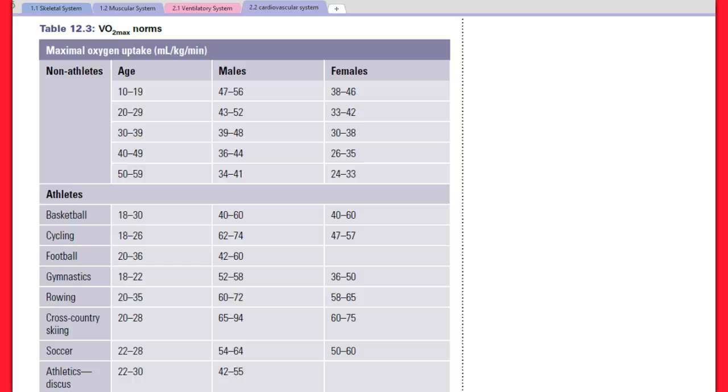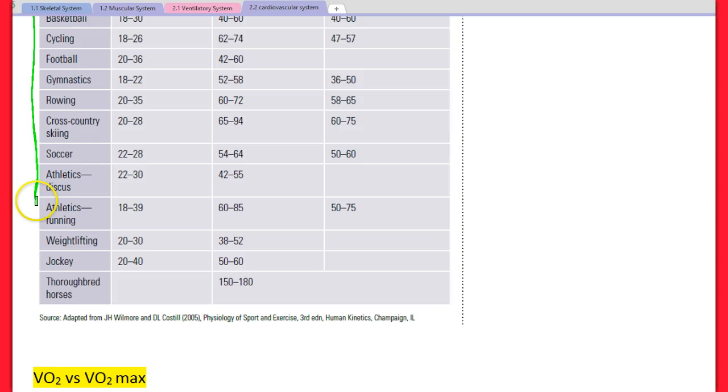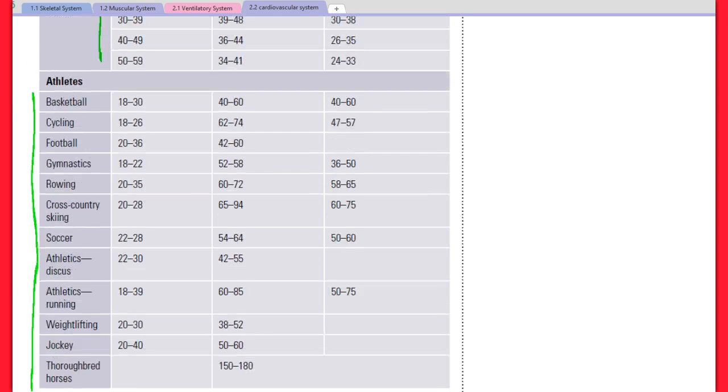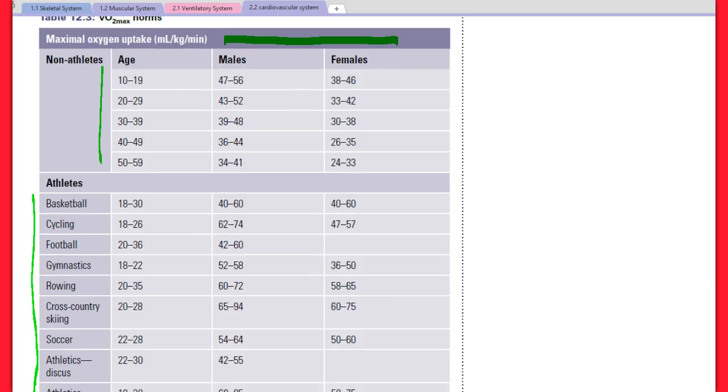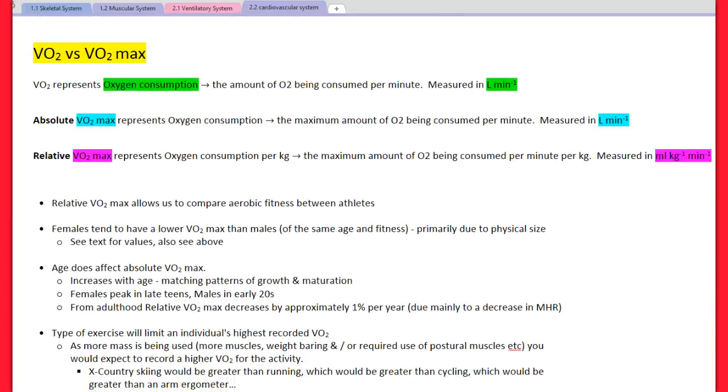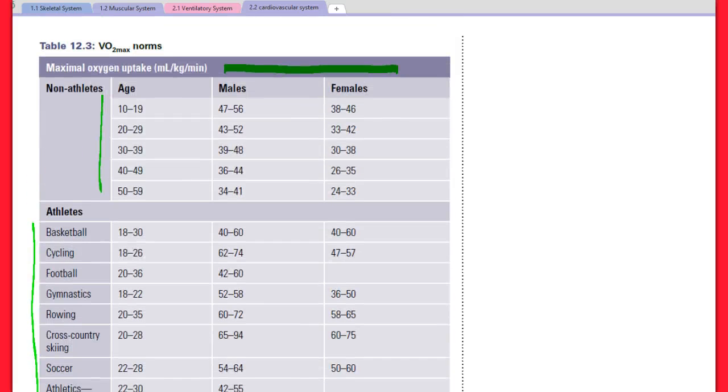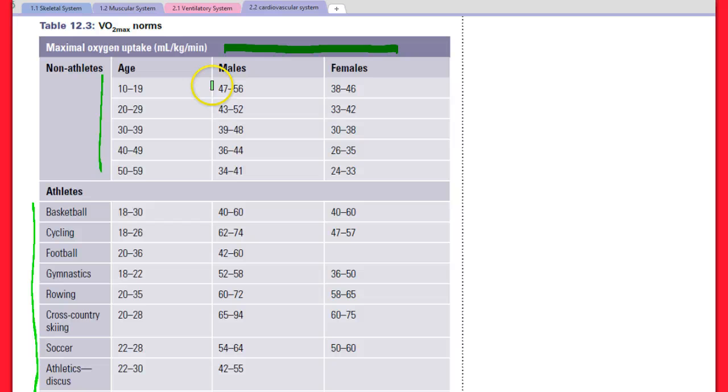So here are some norms. When we're starting to look at comparisons of VO2 maxes, we can see we have age that we can look at, males and females, and we've also got a range for particular sports. If we look at this bit here, 10 to 19 males have an average VO2 max of 47 to 56, 20 to 29, 43 to 52.